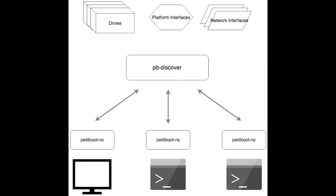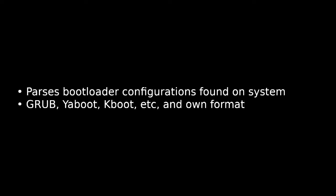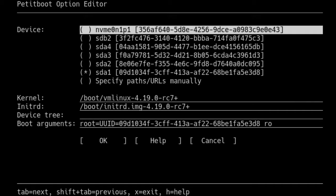Petitboot is made up of two core components. The pb-discover process is a server that runs in the background doing all the heavy lifting: device management, finding boot options, and booting them into memory — mainly by listening to udev hotplug events. We also have Petitboot NC, an ncurses front-end that runs on every interface: VGA display, serial interface, IPMI console, and so on.